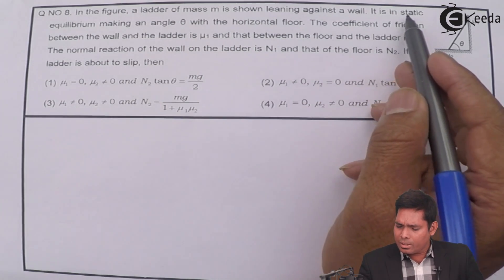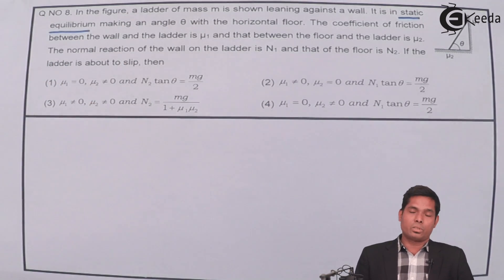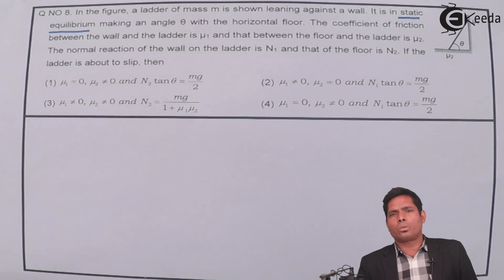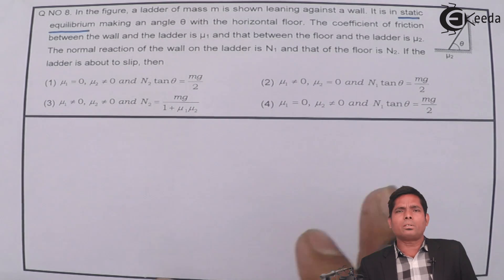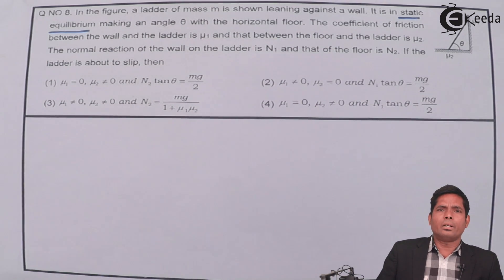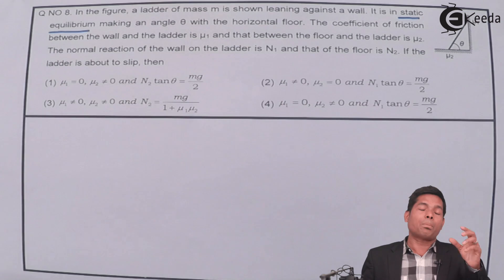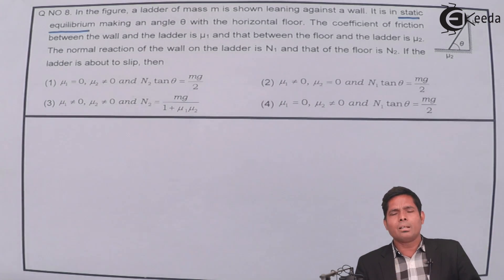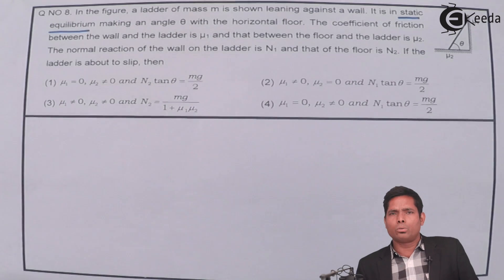It is in static equilibrium. Static equilibrium means it is at rest — there is no translational motion and no rotational motion of the center of mass. Net torque is zero and net force acting on the body must be zero. For static equilibrium, these two conditions must be applied: the force equation and the torque equation. We have to balance both.